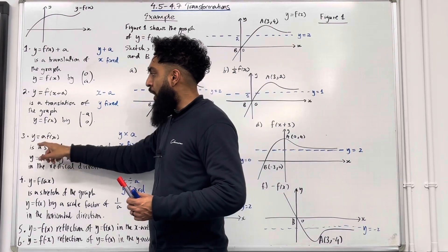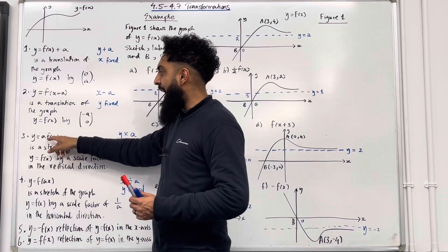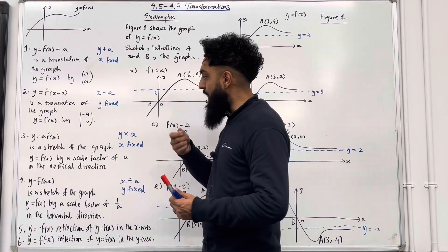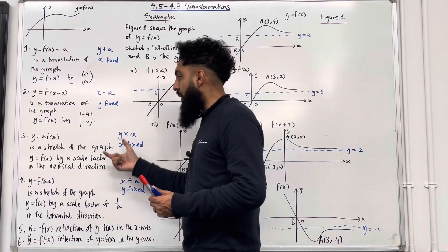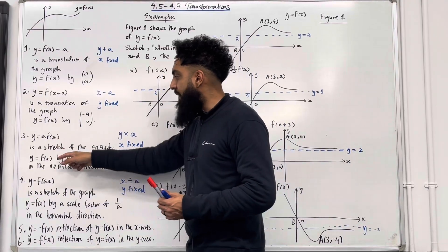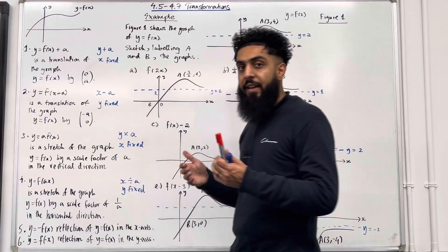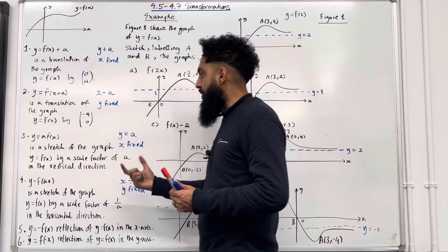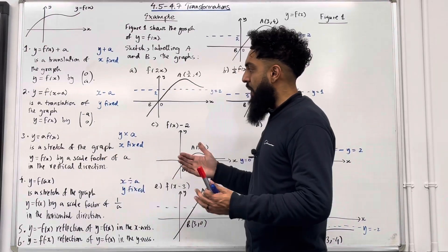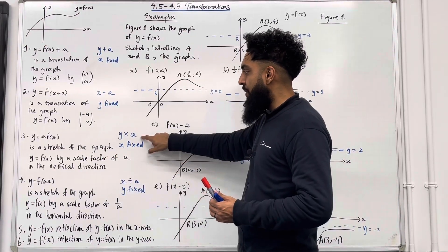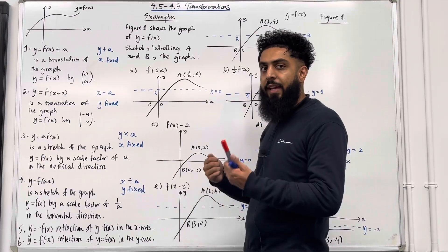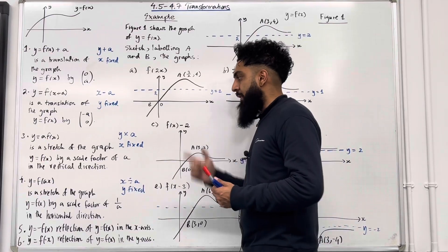Number 3: y equal a multiplied by f of x is a stretch of the graph y equal f of x by a scale factor of a in the vertical direction. In other words, you take the y coordinate and you multiply by a, keeping x fixed.